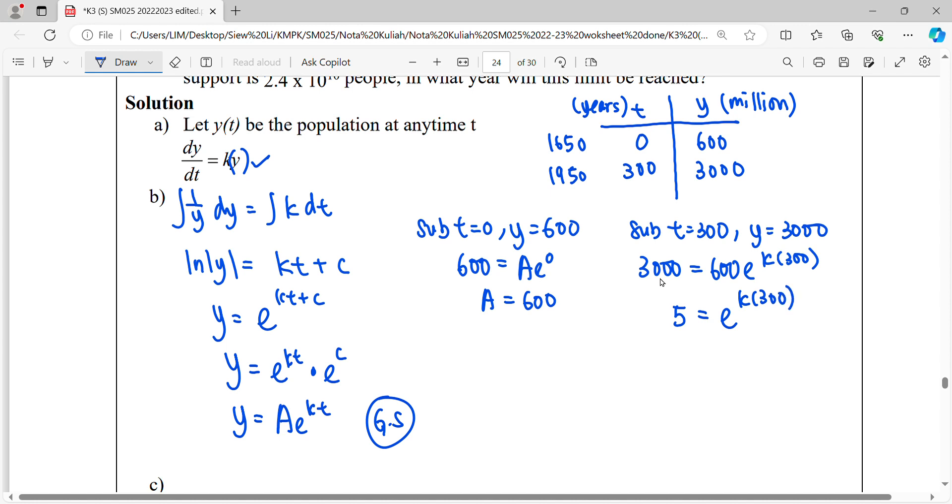When we move the e back to the left-hand side, it will become ln. To find k, it will be 1 over 300 ln 5.